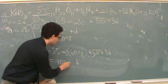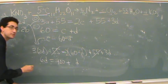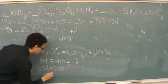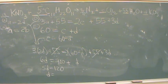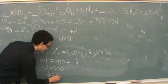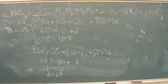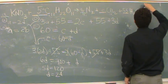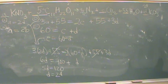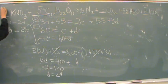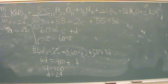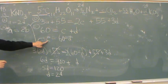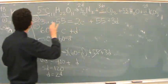The 55 cancels. It looks like 5D equals 120. What's D? 24. So D is 24. Now that I know D, what's A? 48. Now that I know A, what's B? 24. And what's C? 36. That goes over there. I think that's everything.